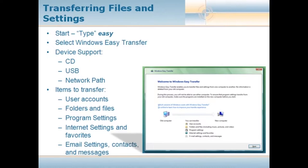Some of the items the wizard will transfer for you are the user accounts, all the folders and files that belong to those user accounts, your program settings, your internet settings, your favorites — we all know internet favorites are the most important — and of course your email settings, your contacts, and all of your messages. With all of these, you can customize what you want to take with you and what you want to leave behind, but these are really the most common options people tend to use.